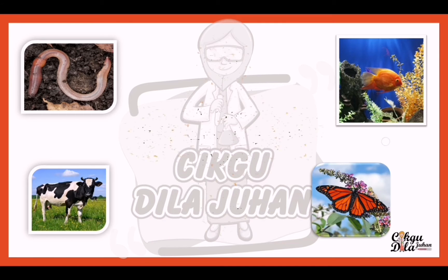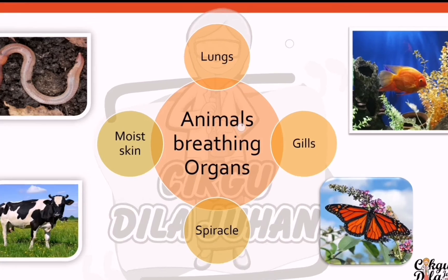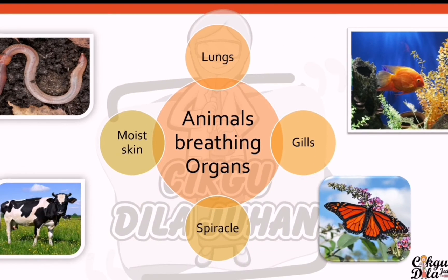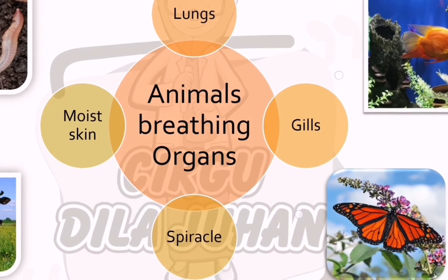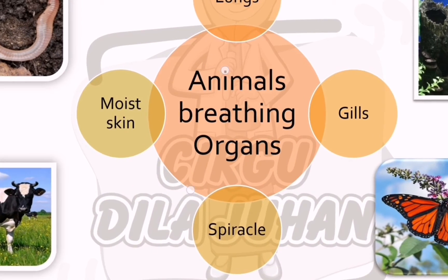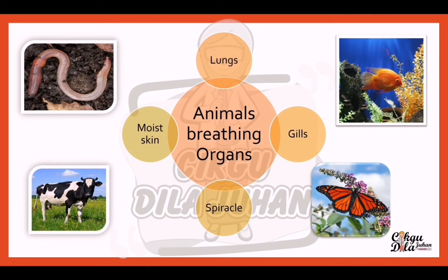There are four types of breathing organs of animals: the first one is lungs, then gills, spiracles, and moist skin.